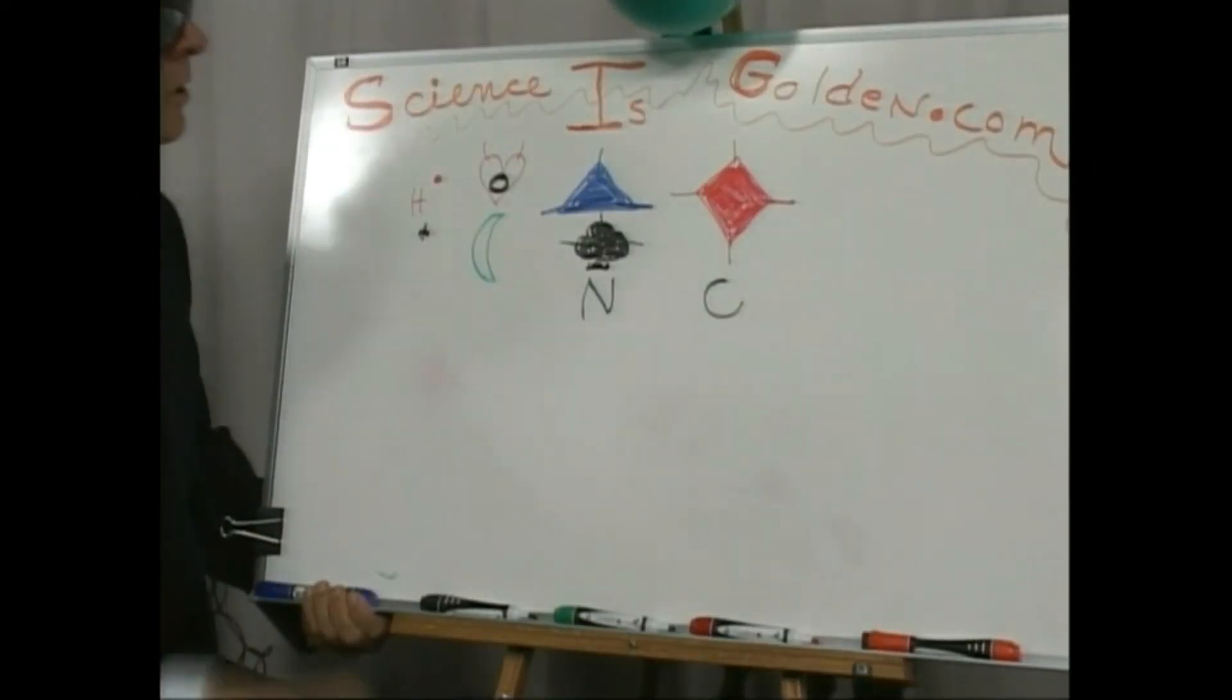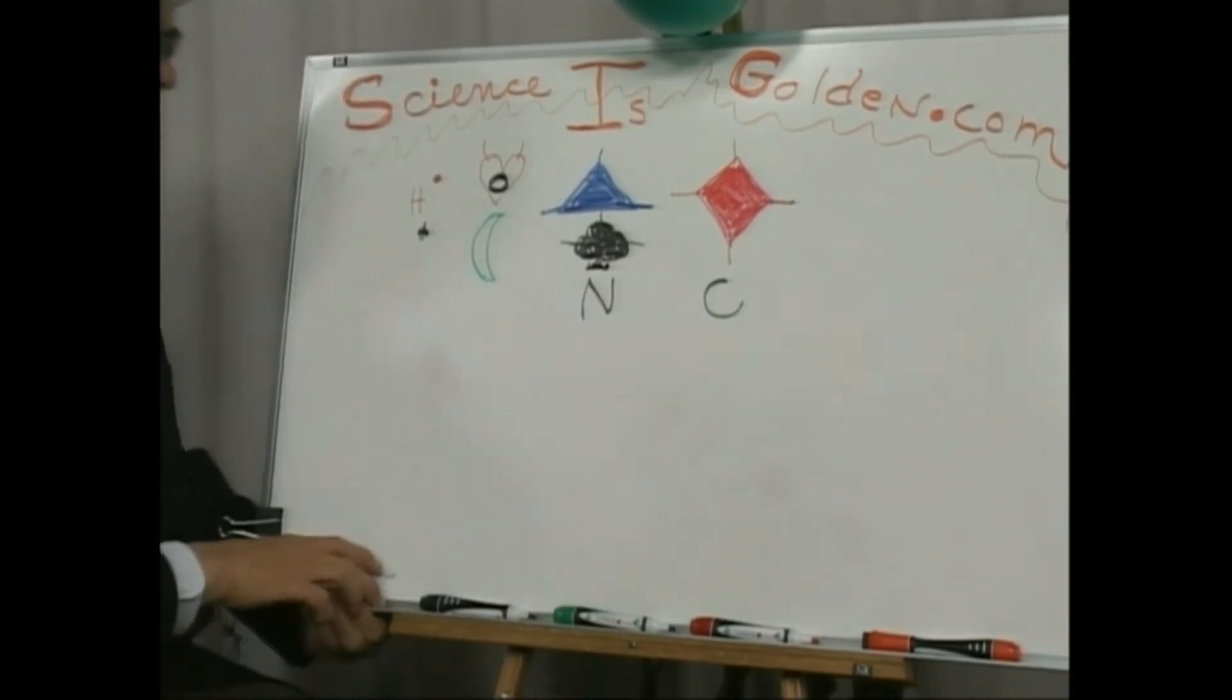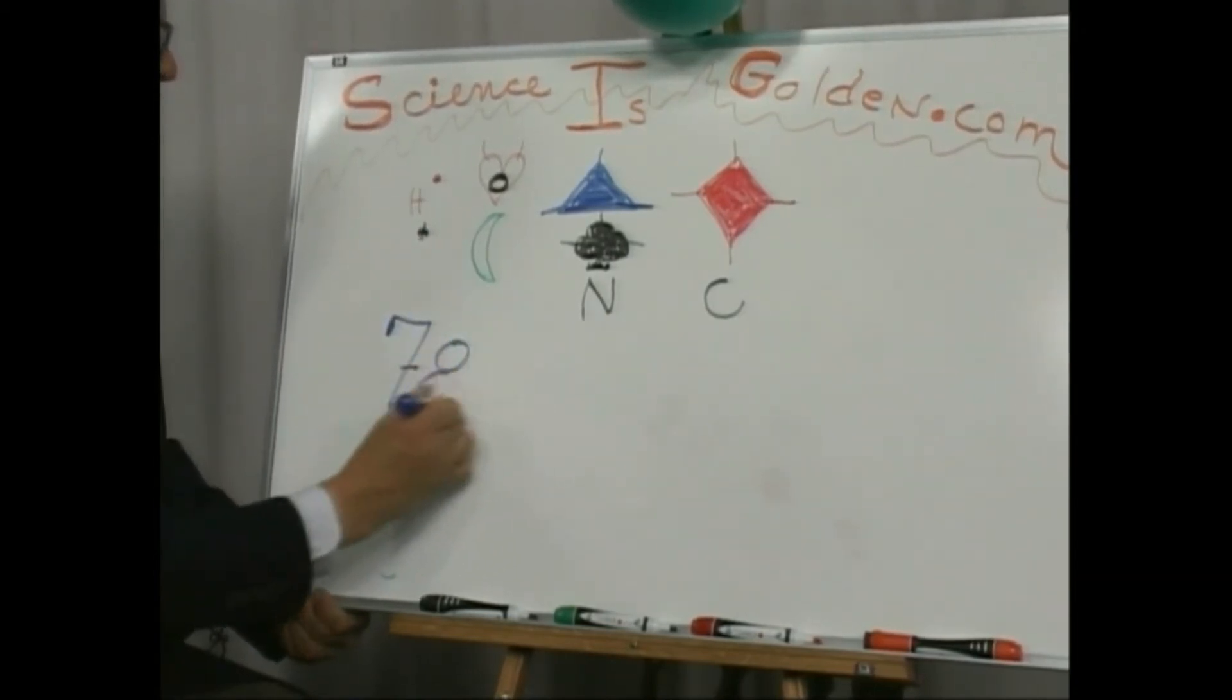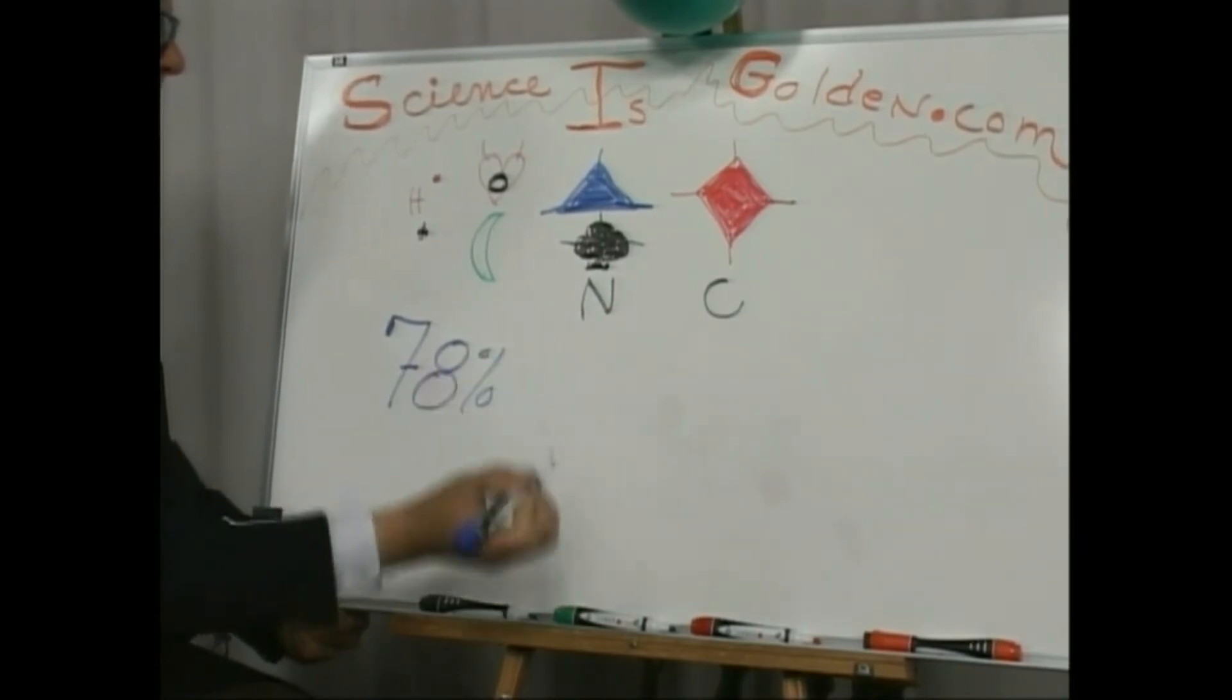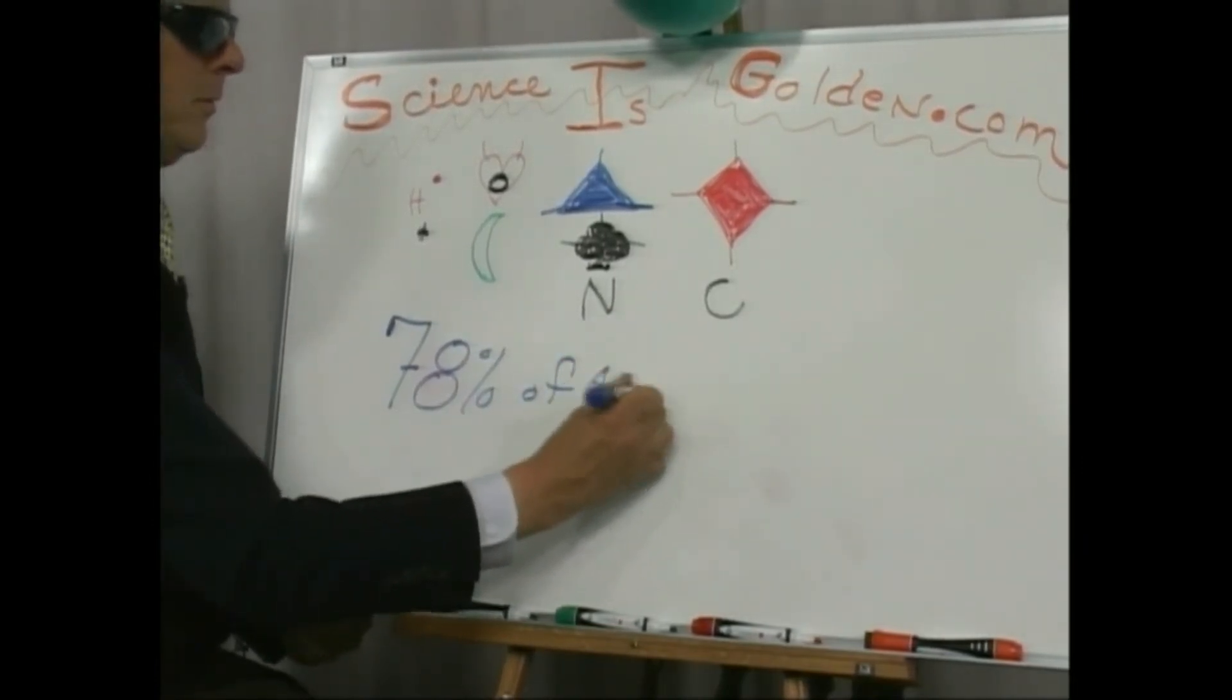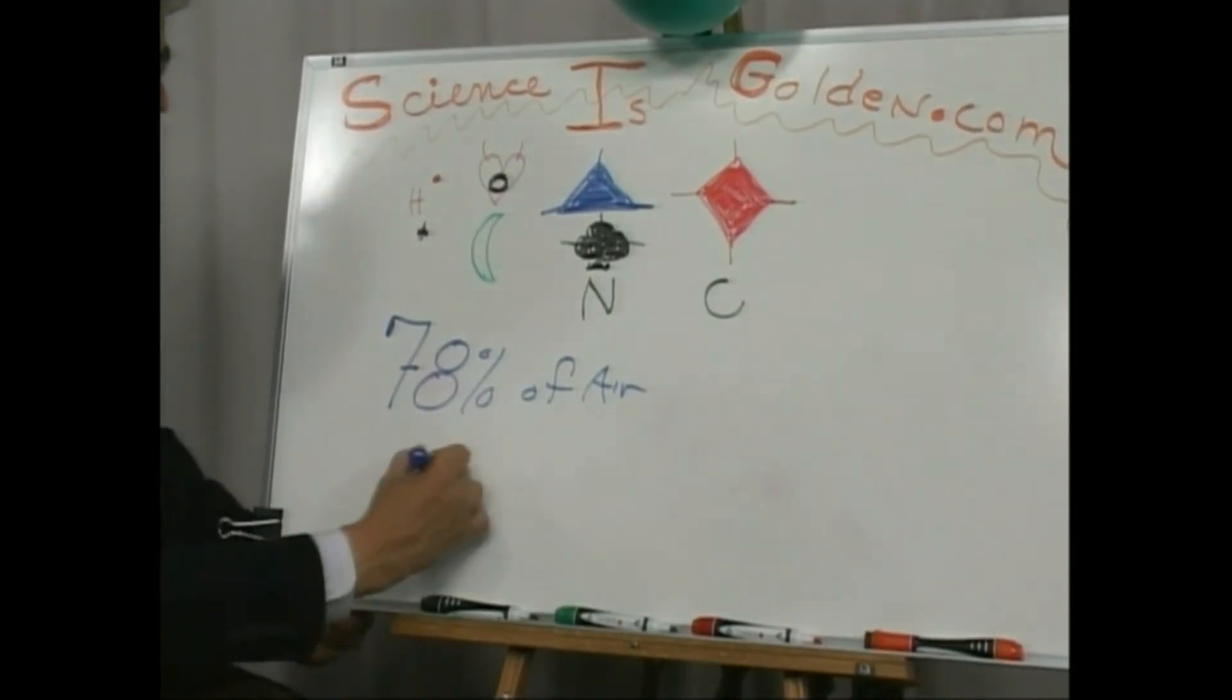Let's come live here. So what is in the air now? N2, there's a triple bond. 78% of the air that you breathe right now is nitrogen.